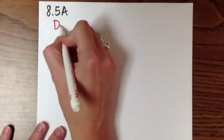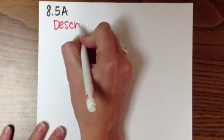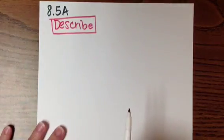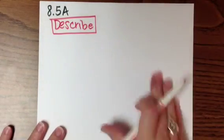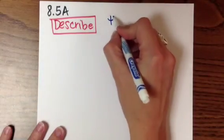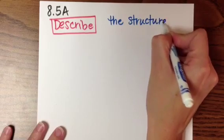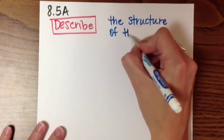I first start off by identifying the tech with my students and then we label the verb. This tech describe is very important because they're going to have to describe all of these things that are over here. Mainly the structure of the atom.